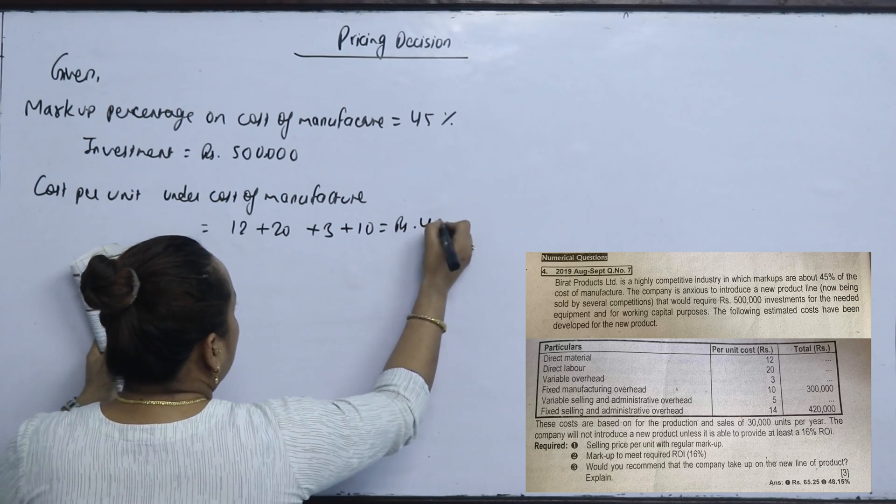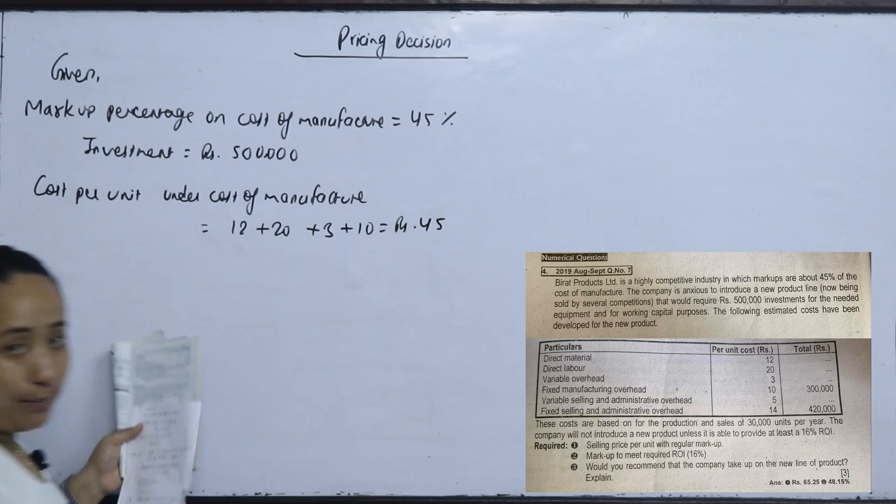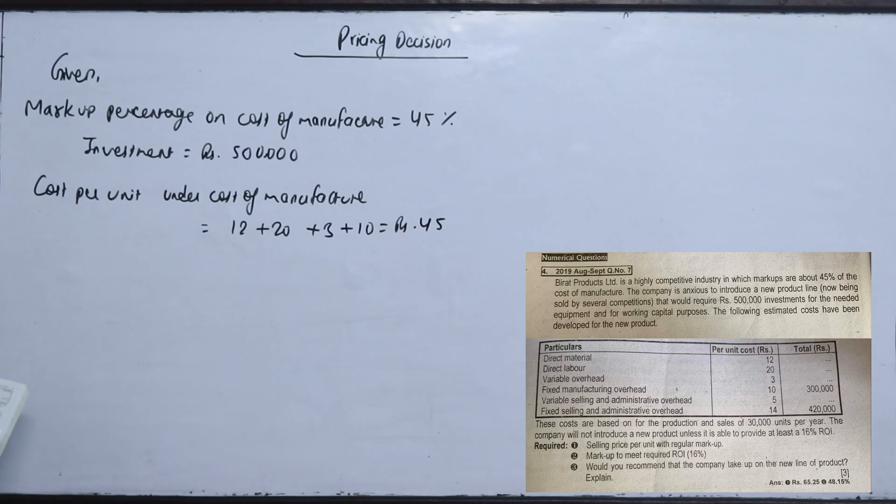The total cost per unit under cost of manufacturing is 45. This is the manufacturing cost base on which the markup percentage will be applied.